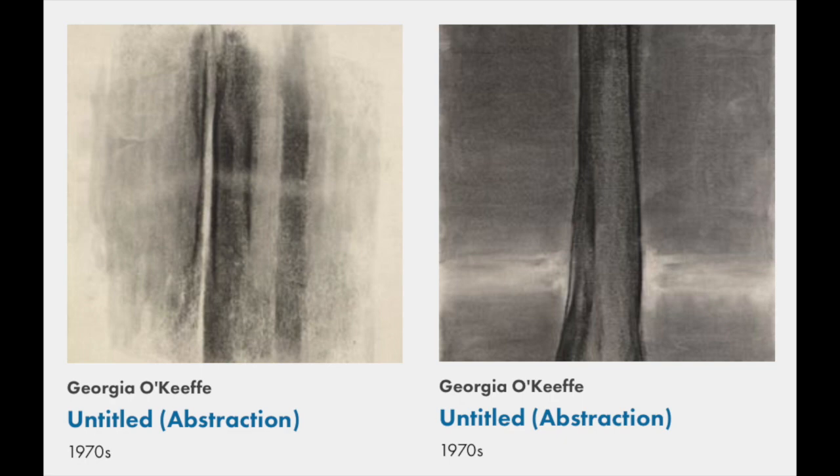Georgia O'Keeffe was born in 1887 in Wisconsin. She attended art school from 1905 until 1908, then taught art in South Carolina and Texas. She started creating abstract artwork in charcoal and was one of the very first American artists to practice abstraction.